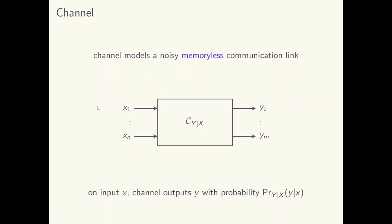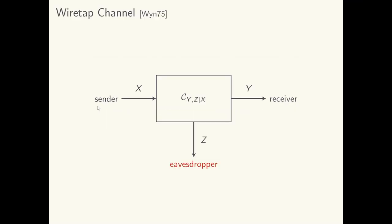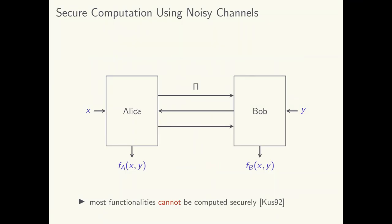Guaranteeing security while communicating over a noisy channel, as well as exploiting channel noise to facilitate security, have both been studied extensively in core information theory and cryptography. A notable example is the wiretap channel introduced by Wyner in 1975. In this model, there is a noisy link from the sender to the receiver, and additionally there is an eavesdropper tapping onto this channel over another noisy link. This is modeled by a single-input multiple-output channel, and we are interested in the rate at which the sender can message the receiver while ensuring privacy from the eavesdropper.